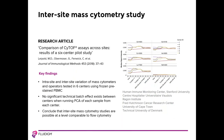Multi-site comparisons of mass cytometry have been performed. This one was published in 2018 and was run by Holden Maecker's Human Immune Monitoring Corps at Stanford, with six sites participating worldwide. In this study, they tested intra- and inter-site variation of mass cytometers and operators using frozen pre-stained PBMCs. There were no significant technical batch effects found between centers when running principal component analysis. The authors concluded that inter-site mass cytometry studies are possible with a level comparable to that of flow cytometry.